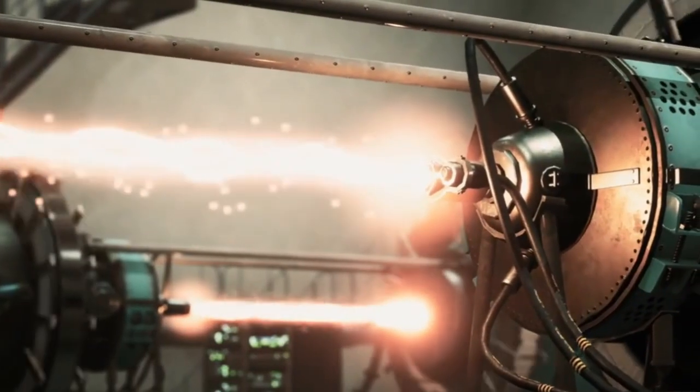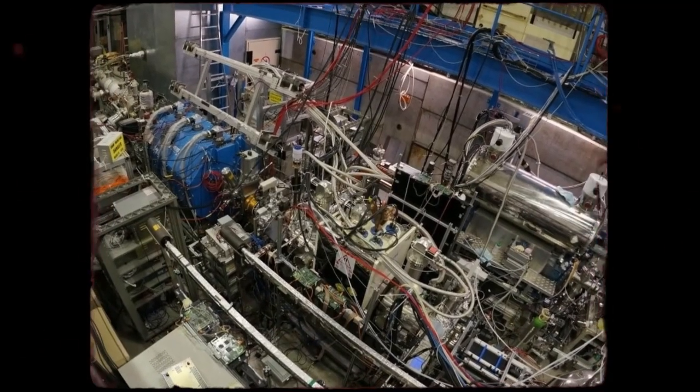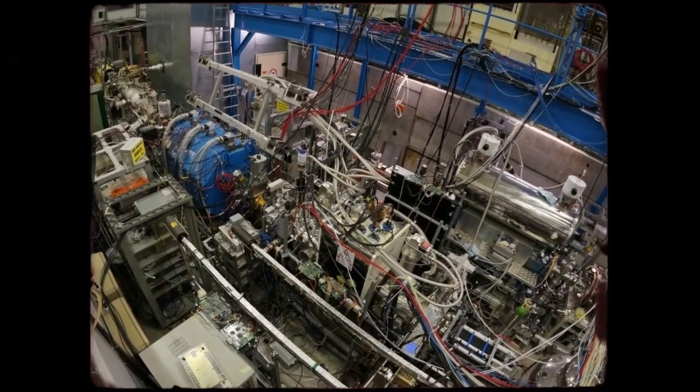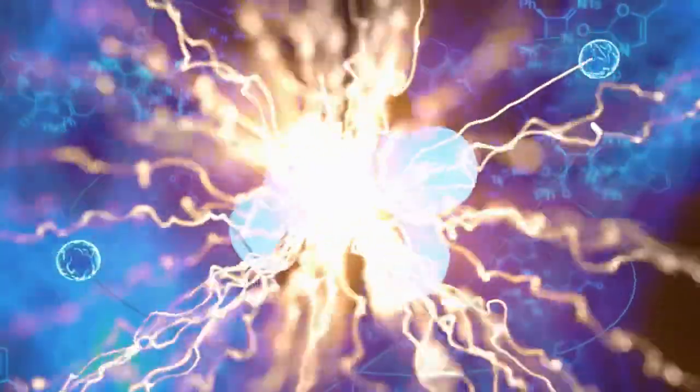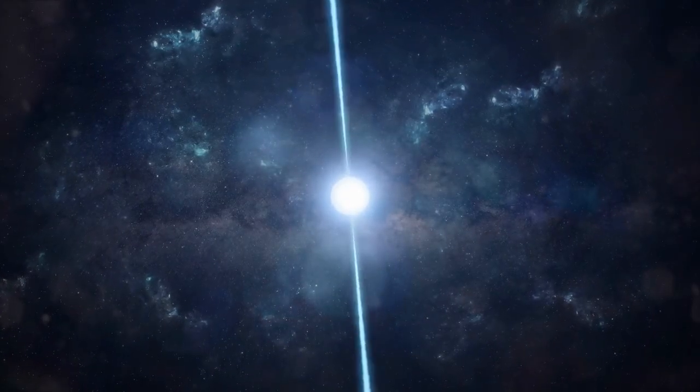One of the most notable achievements in antimatter research was the production of antihydrogen atoms in 1995 at CERN. By combining antiprotons and positrons, researchers were able to create and briefly contain antihydrogen, paving the way for future experiments.